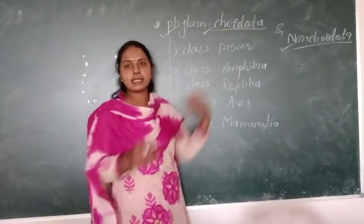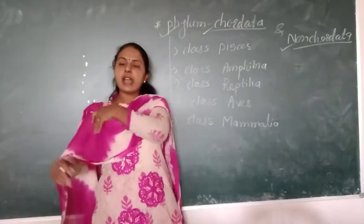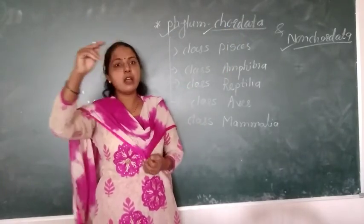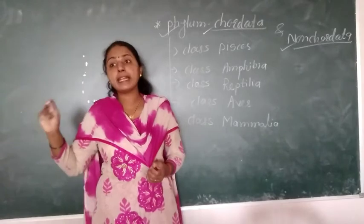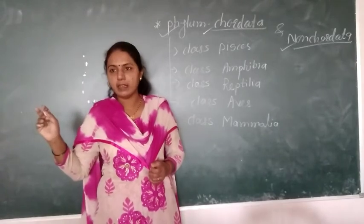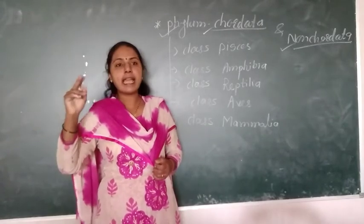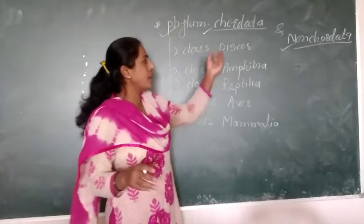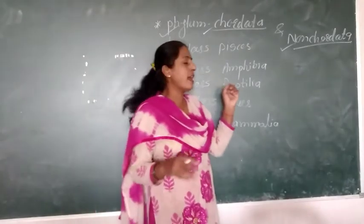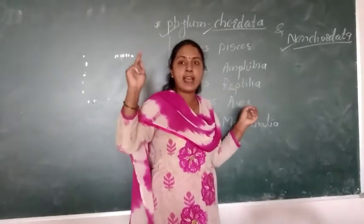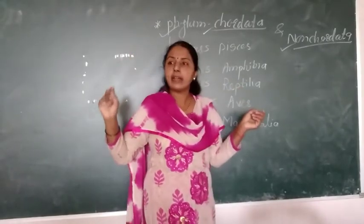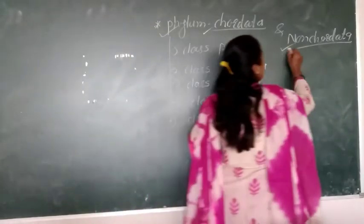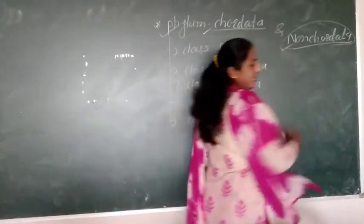In the previous classes we have seen phylum Porifera to phylum Echinodermata — these 9 phyla. All animals present in phylum Porifera to Echinodermata are non-chordates.